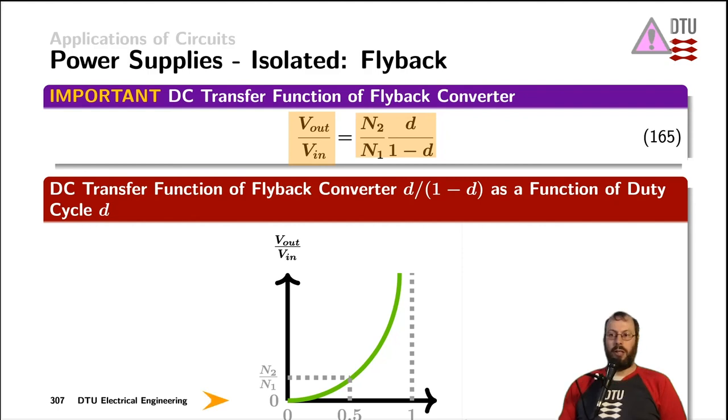Through the duty cycle, we can control the output voltage all the way down to zero. At a duty cycle of 0.5, we get exactly the transformer turns ratio N2 divided by N1, which would typically be close to the nominal case, the nominal operating point of the flyback converter.